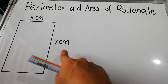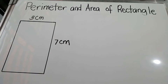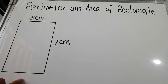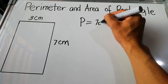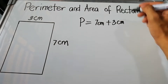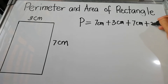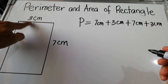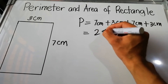For the first example, we have measurements of 7 centimeters for length and 3 centimeters for width. Without writing the other measurements, we know the opposite sides are equal, so the opposite side of 7 cm is also 7 cm, and the opposite side of 3 cm is also 3 cm. To find the perimeter, add all the sides: 7 + 3 + 7 + 3 = 20 centimeters.